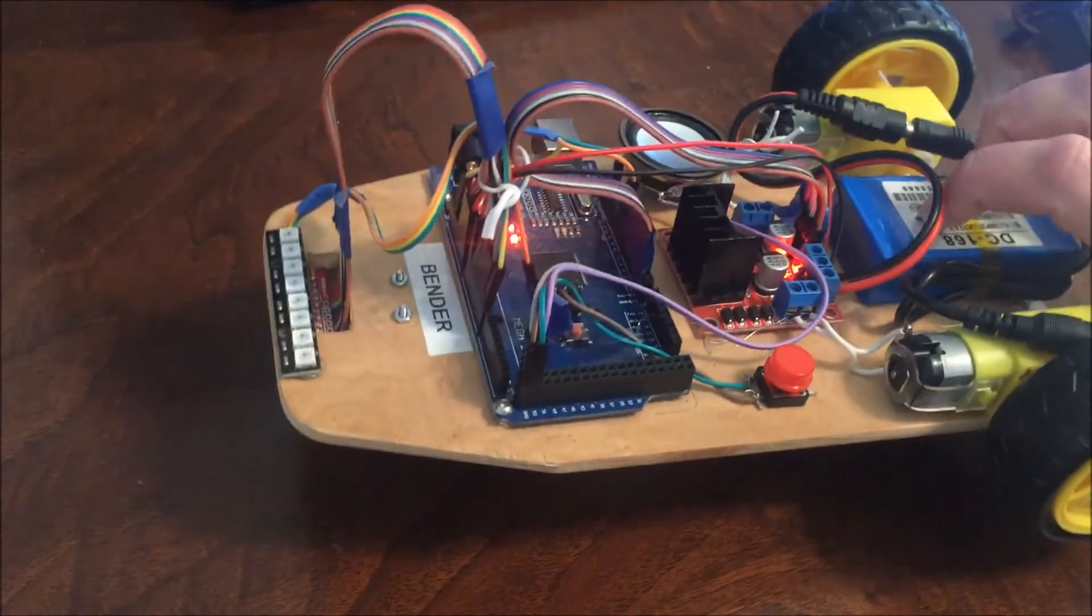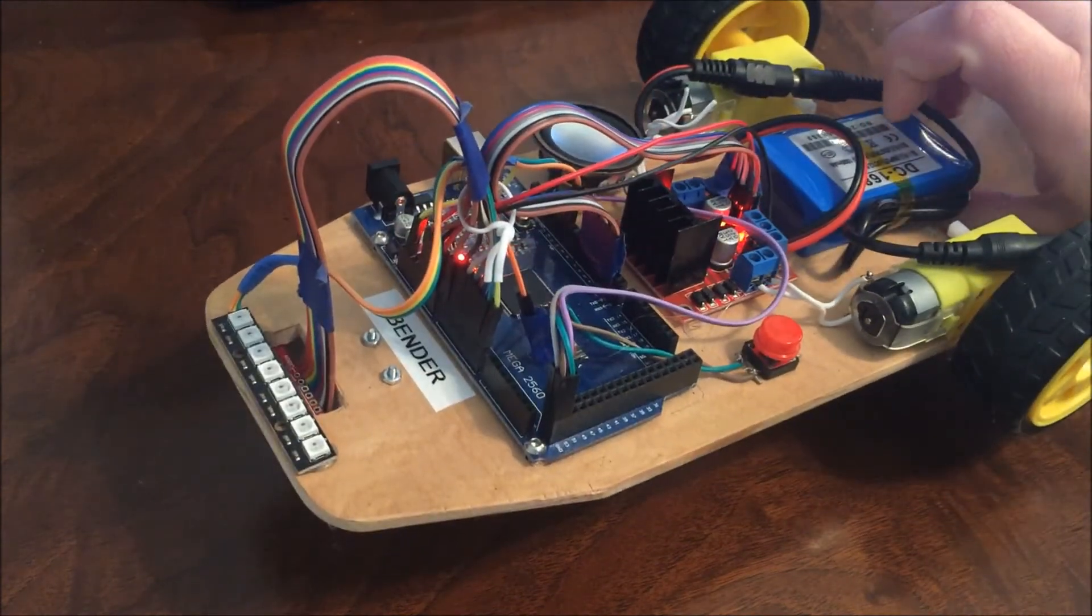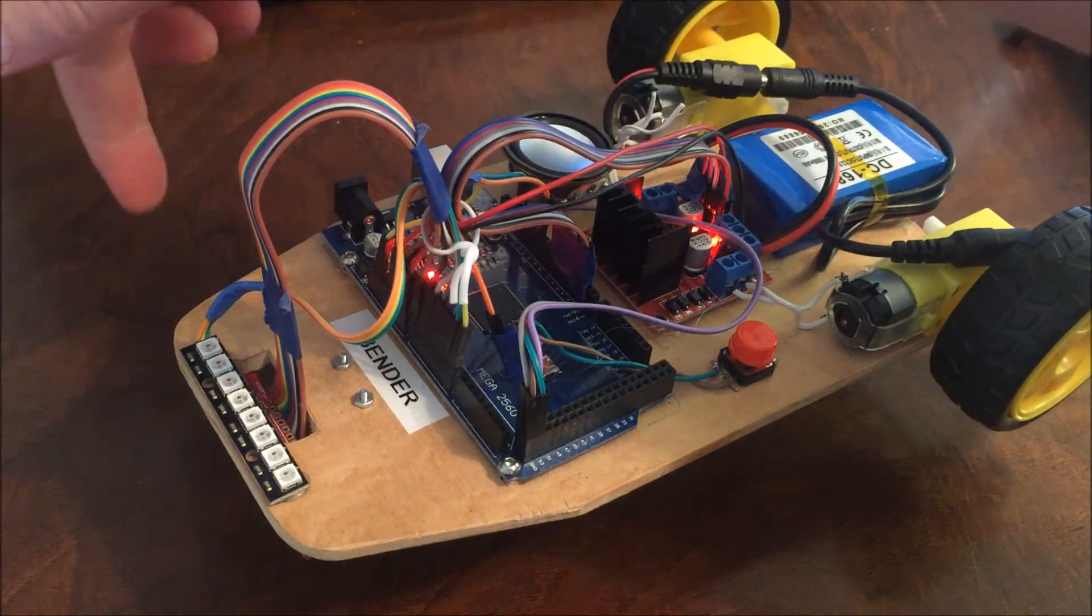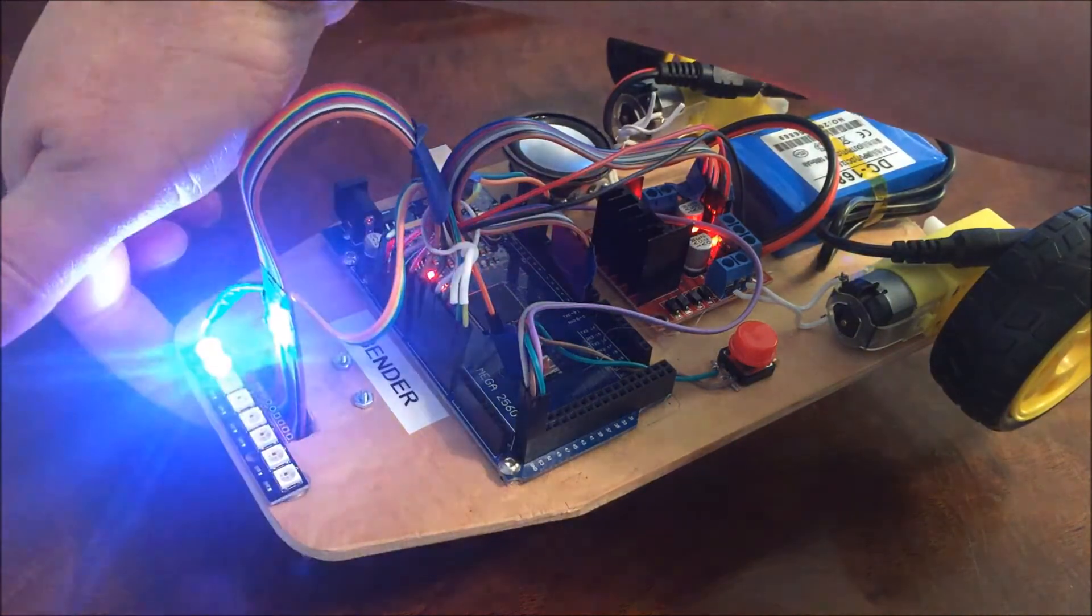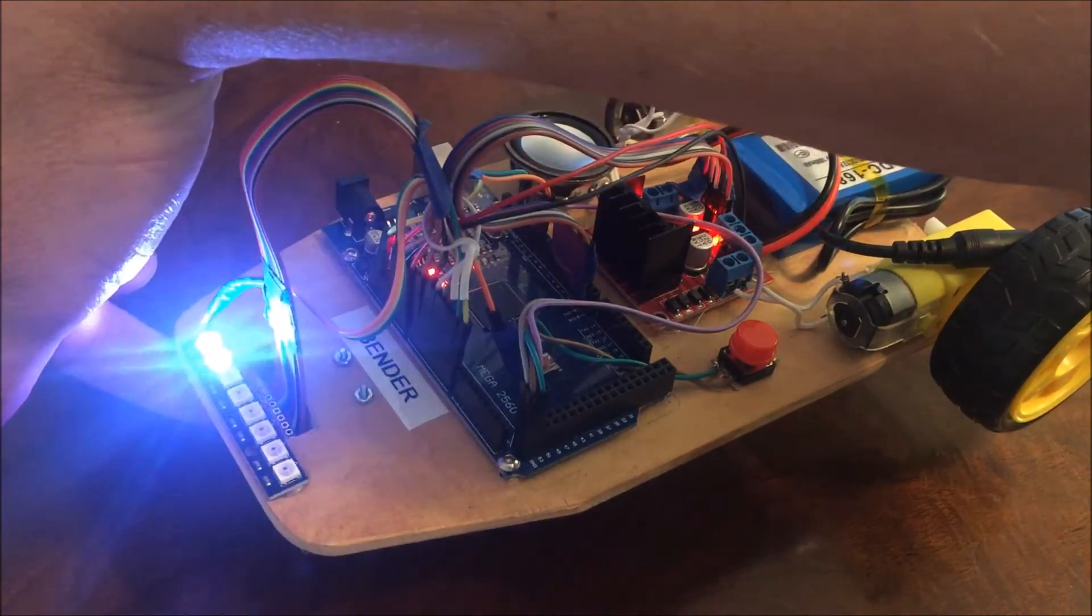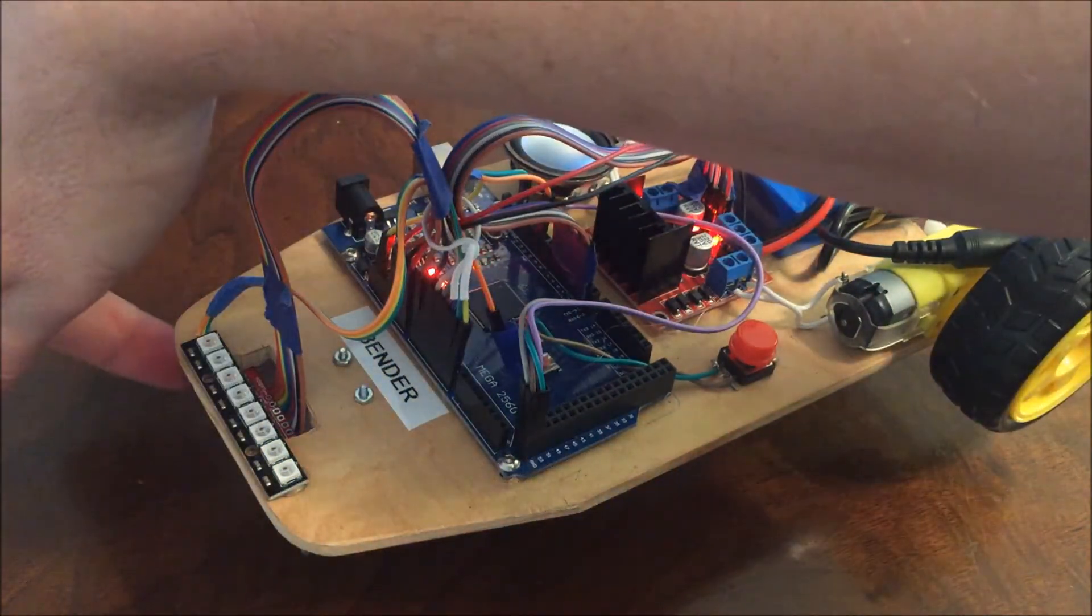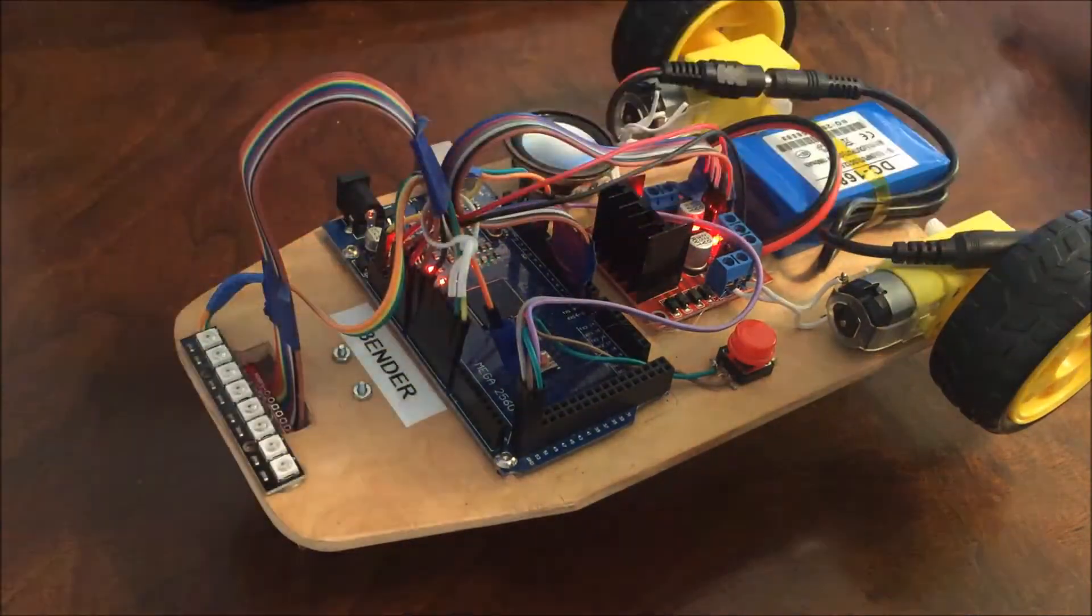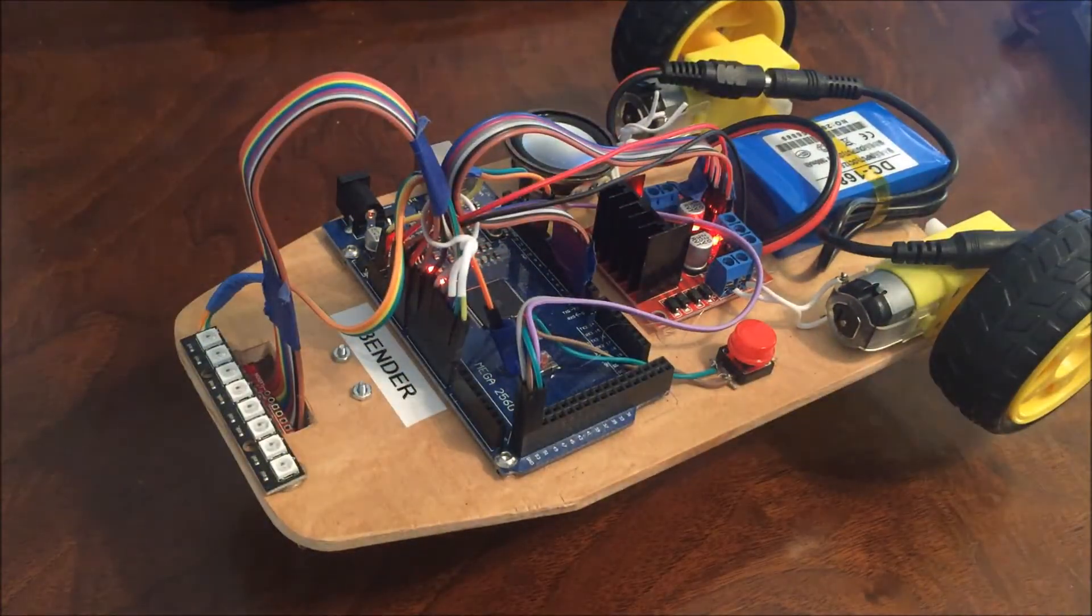On the top, I put the eight NeoPixel strip right here and that lets me know what the sensors are showing. Notice when I put my fingers under the sensors, it's reflecting the LED back to it and so it's showing me where the line is. So that really helps you calibrate and debug problems by hooking that up on the top.